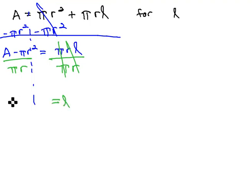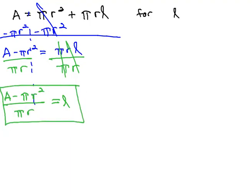This leaves just l is equal to A minus pi r squared over pi r for our final answer.